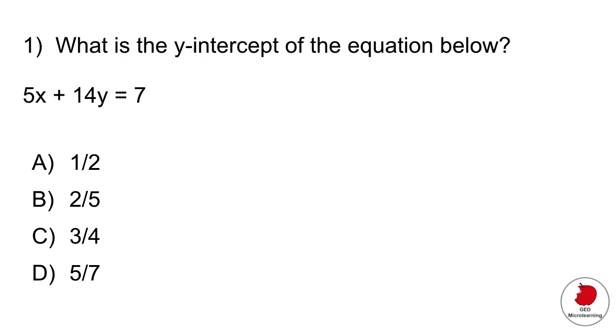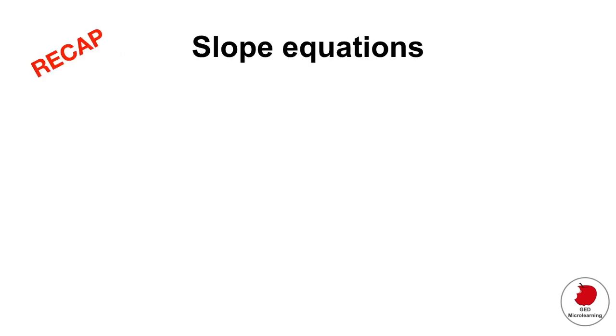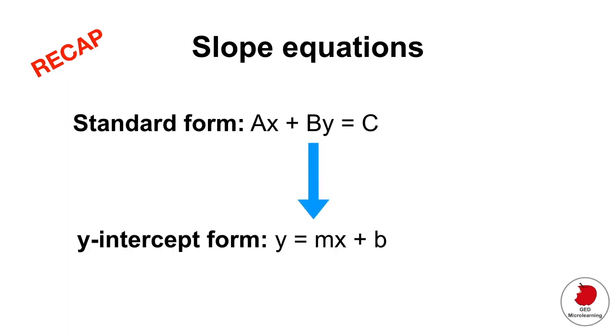In the first one it says what is the y-intercept of the equation below? So what they're asking you is at what point does the line cross the y-axis? The vertical axis. And they're giving you an equation in this format. So this format when you have x plus y is equal to a number is what we call standard form. So what you have to do is first of all change this equation so it looks like this in y-intercept form.